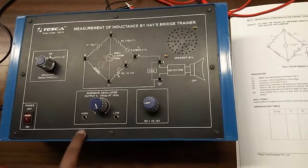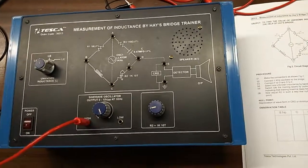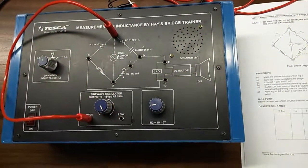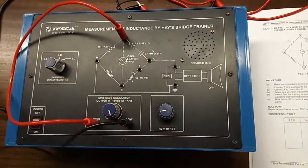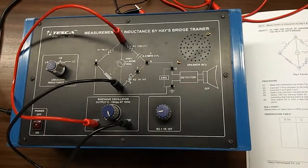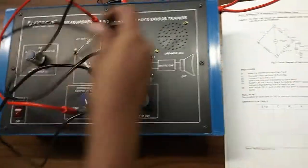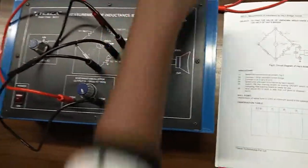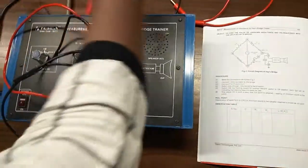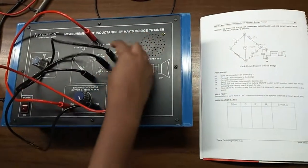We will give sine wave, 1 kilohertz sine wave here at point A and C. Now we will connect point F to D and D to E.